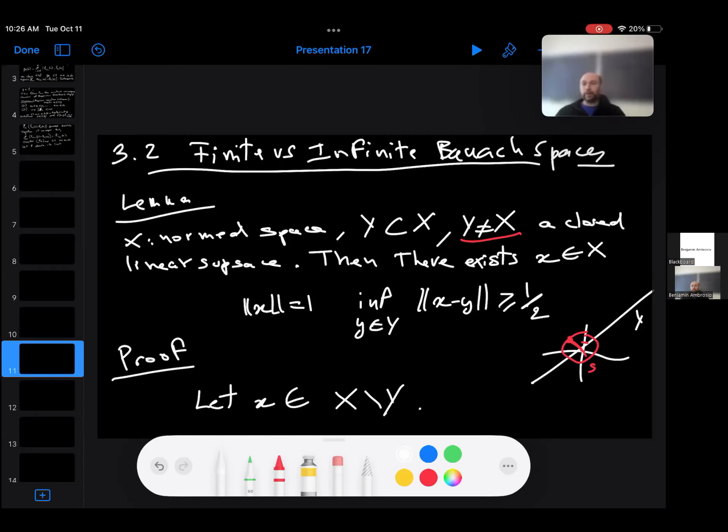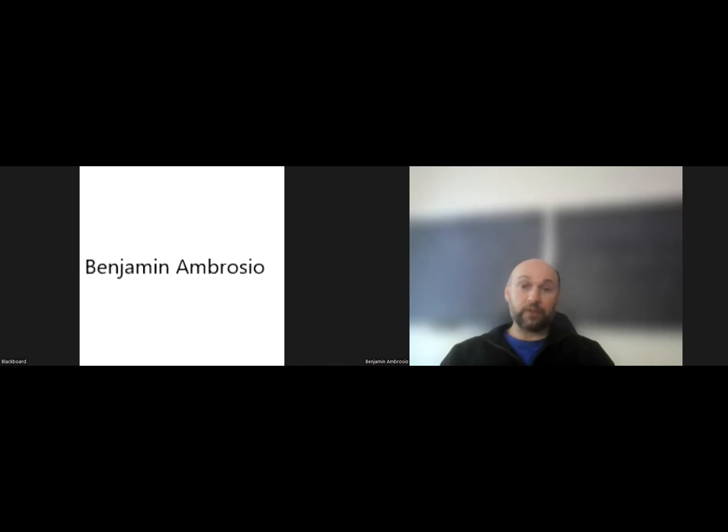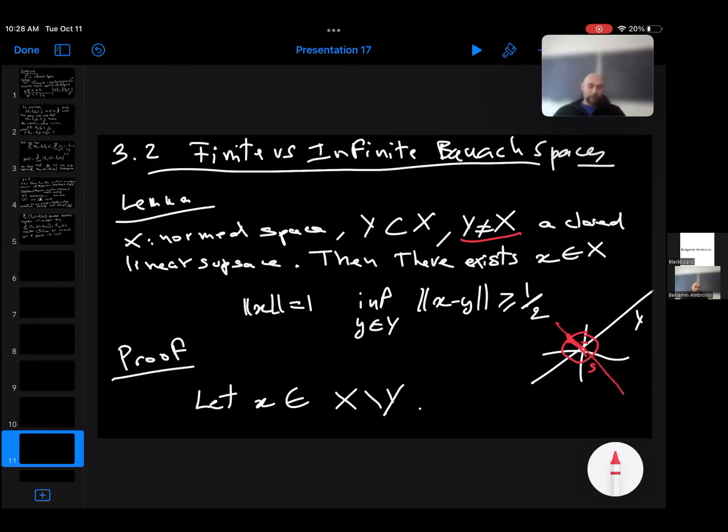You can illustrate that with this small example. Let Y be this line here in R^2. It's not equal to the whole R^2, which is X. If you take the orthogonal line to Y and you pick any point such that the norm of x is one, then you will have that, for example here, the distance is more than one divided by two.